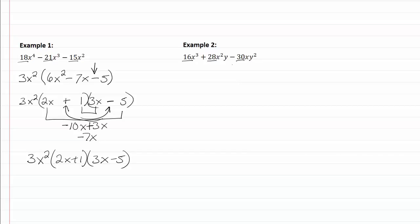So 2 is going to be my greatest common factor for that part, and it looks like I have x's in all of these. So it looks like I'm going to take the lowest exponent, which should be 1 for my x.